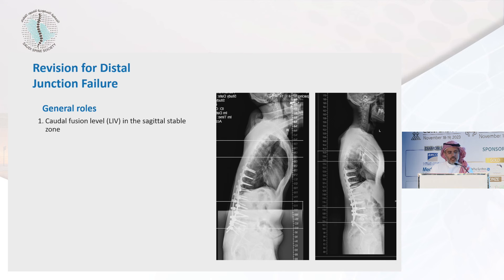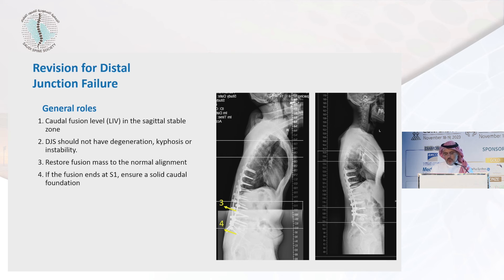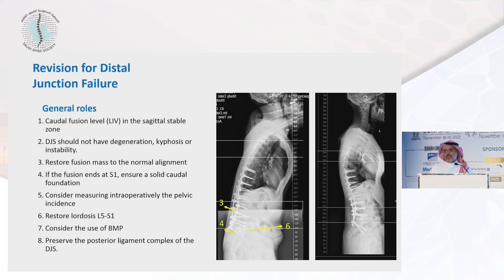Looking at what we did for this patient: caudal fusion level in the sagittal stable zone — in this patient, the pelvis. The distal junctional segment should not be degenerative, kyphotic, or have any form of instability. We restored the fusion mass by doing multiple posterior osteotomies to mobilize it. With fusion ending at S1, we ensured solid caudal foundation with S2 screws. We measured intraoperative pelvic incidence, restored lordosis at L5-S1 with an interbody cage, and used good bone graft while preserving the posterior ligament complex.